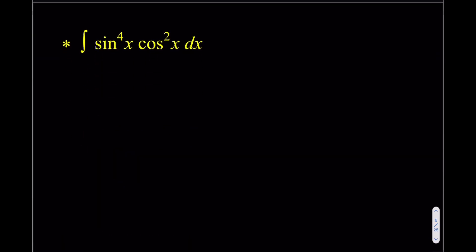One more example. This time we don't have any odd powers. You don't really have anything to separate, so we use our formulas for even powers. A quick refresher: cosine(2x) can be written as 2cos²x minus 1 or 1 minus 2sin²x.